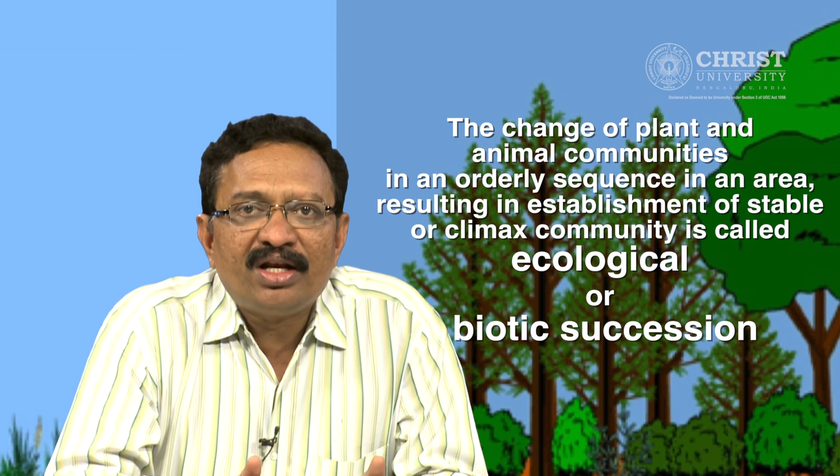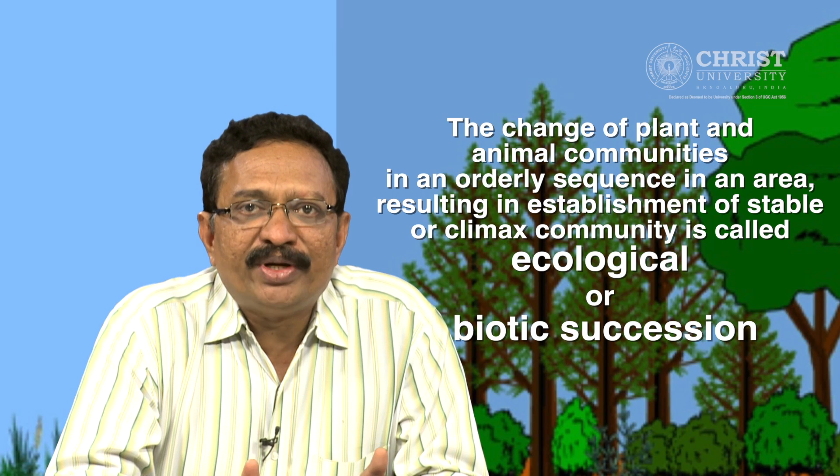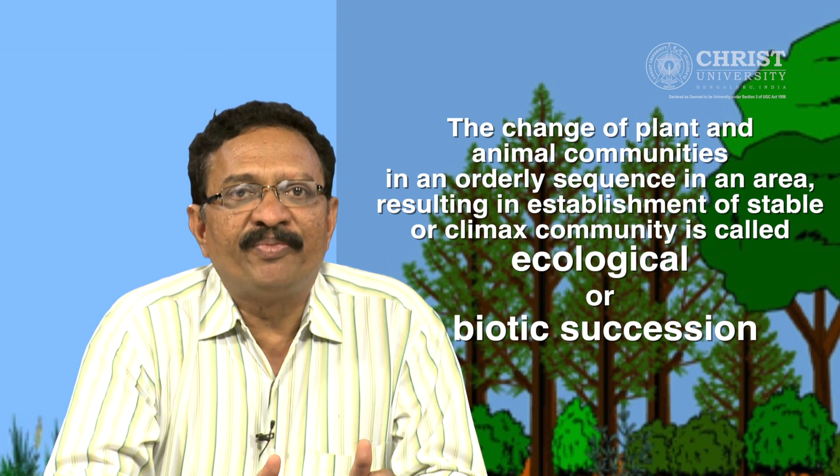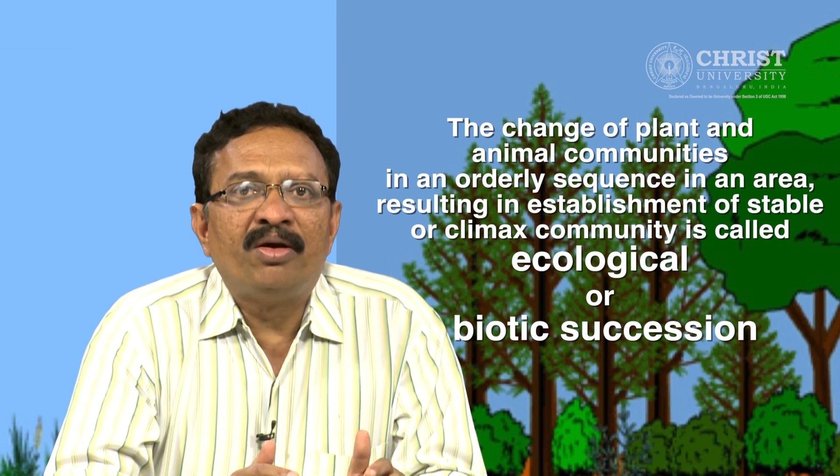Hello students. In today's session, let us learn about ecological succession. The biotic communities are not stable but undergo regular changes in a definite manner with passage of time. Every community undergoes a series of changes until a group of organisms is established which can live and reproduce most successfully in the area. The change of plant and animal communities in an orderly sequence in an area, resulting in establishment of a stable or climax community, is called ecological or biotic succession.